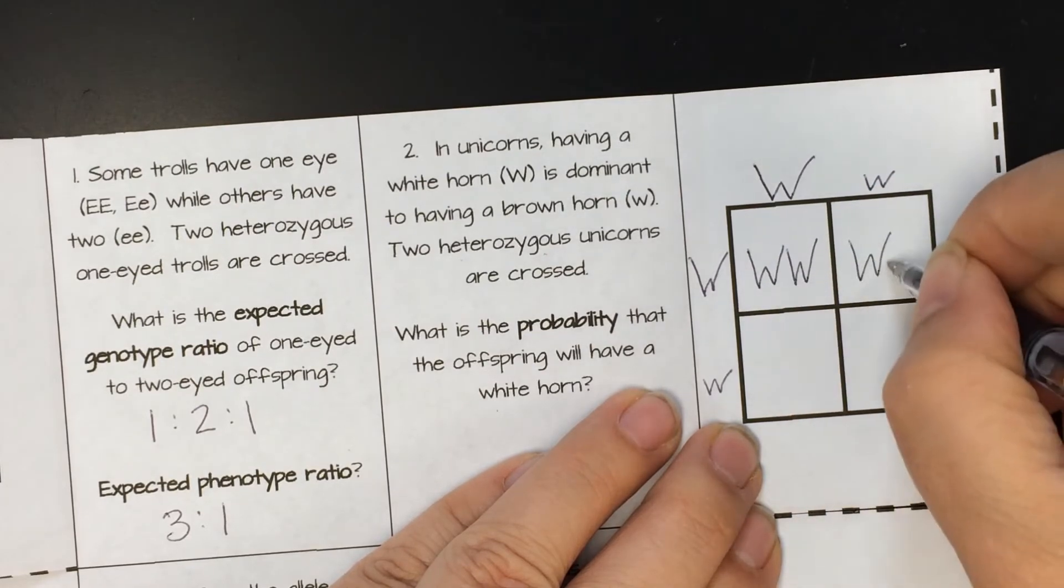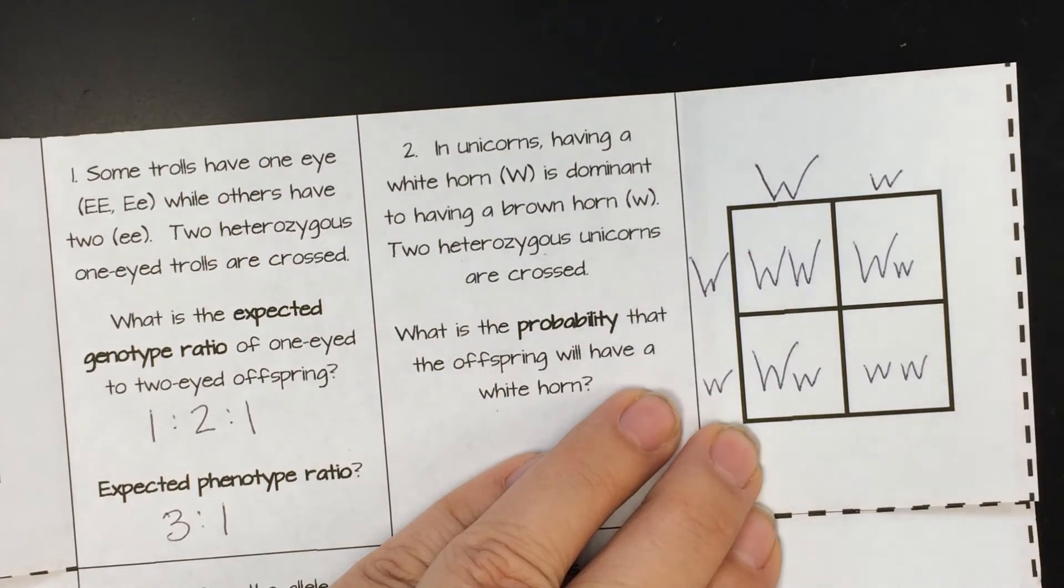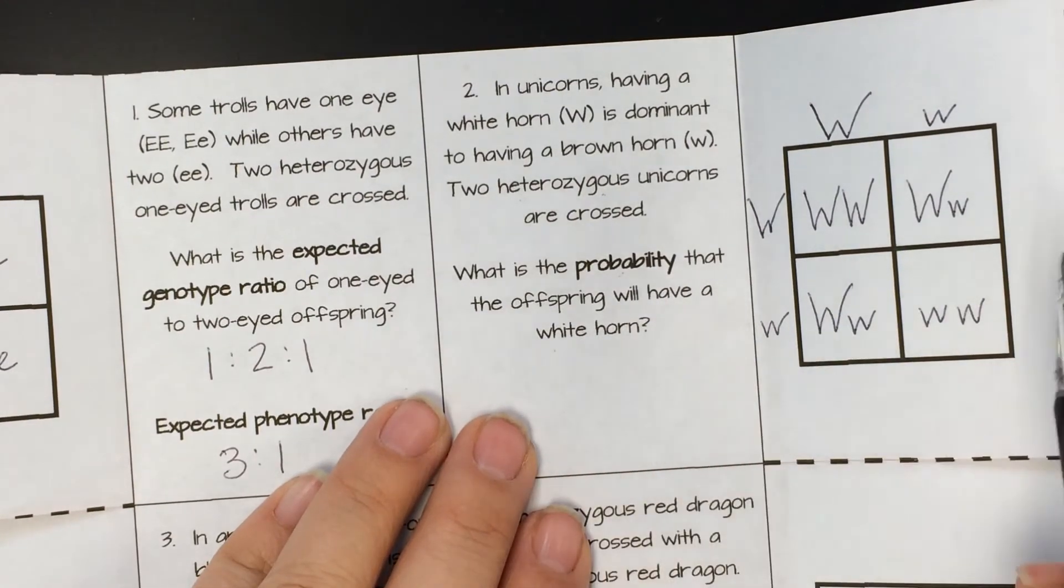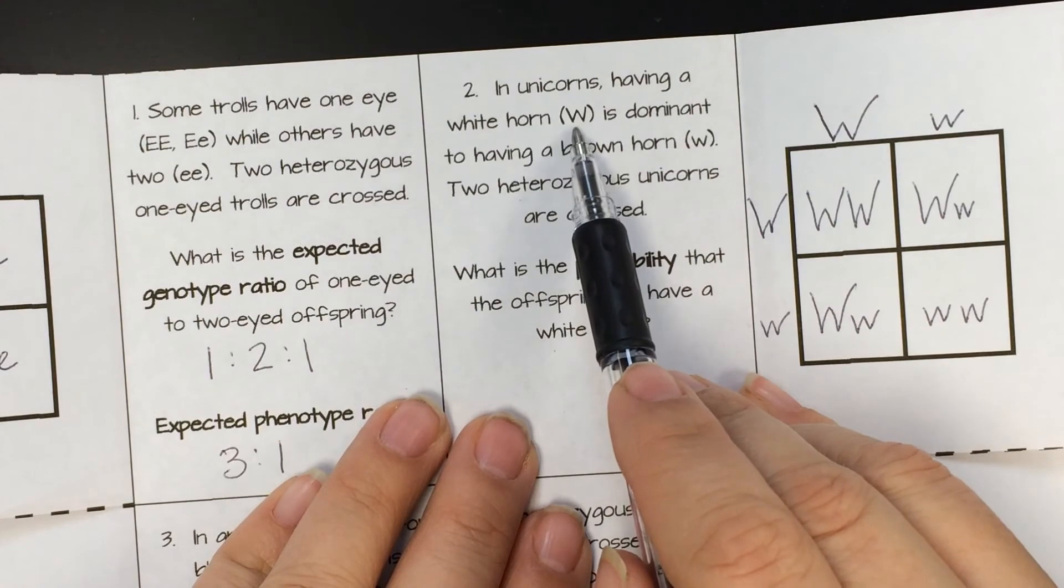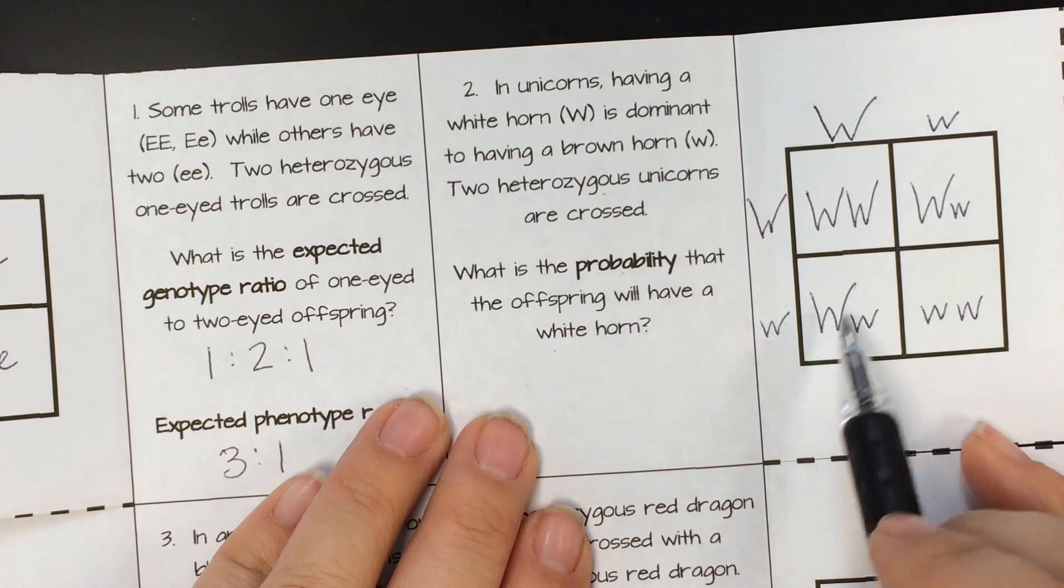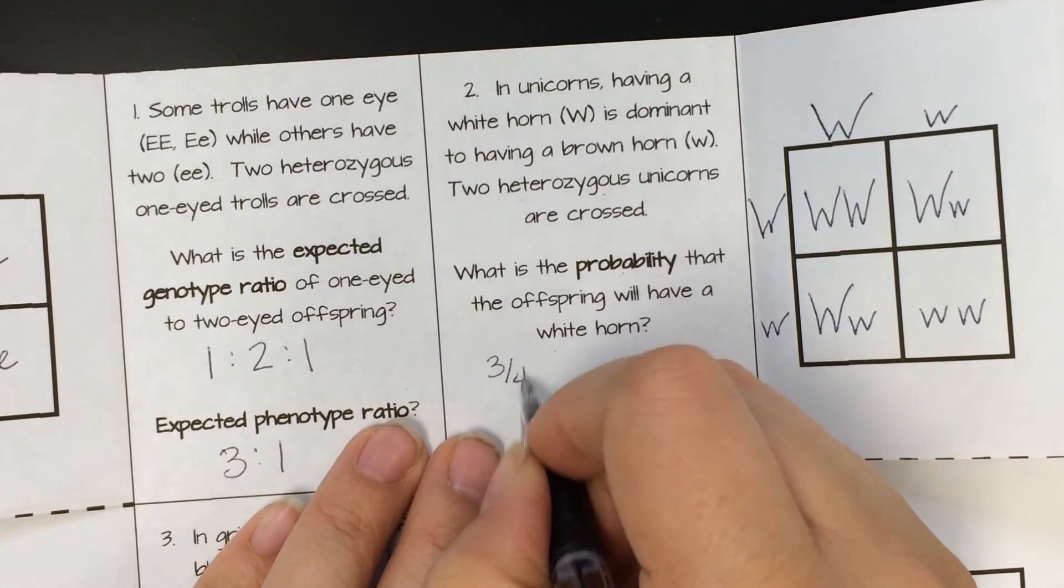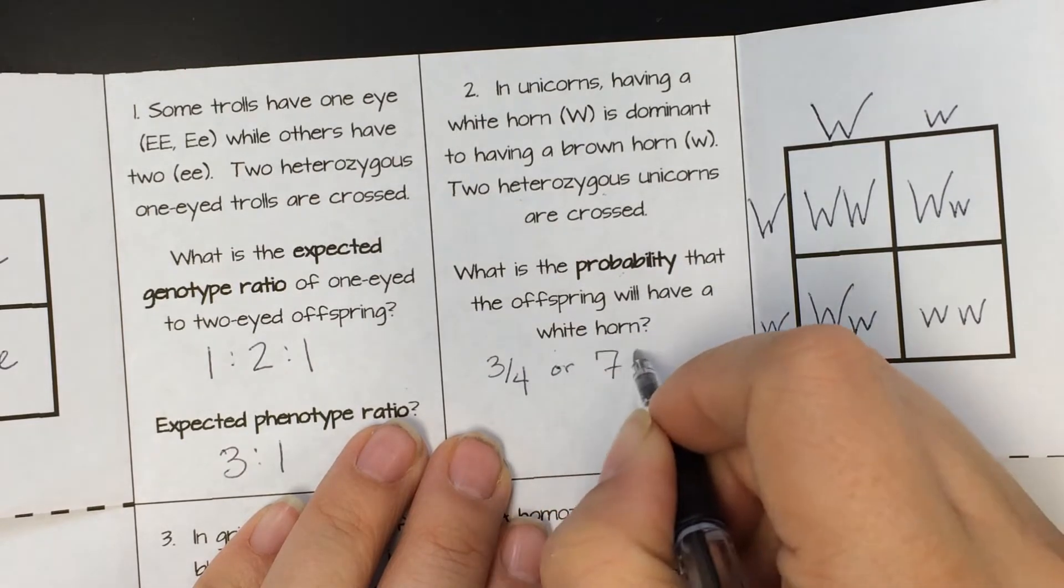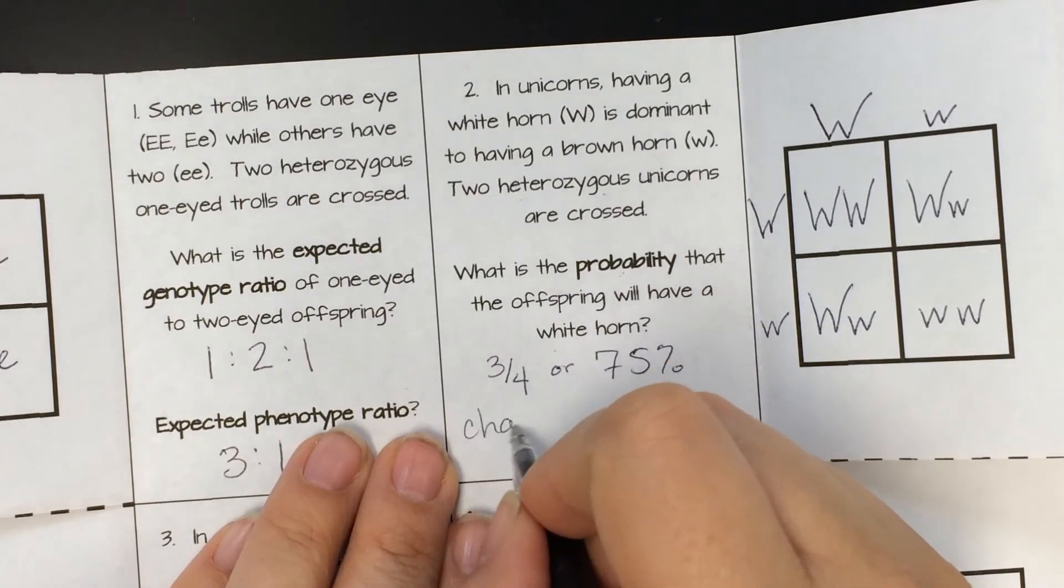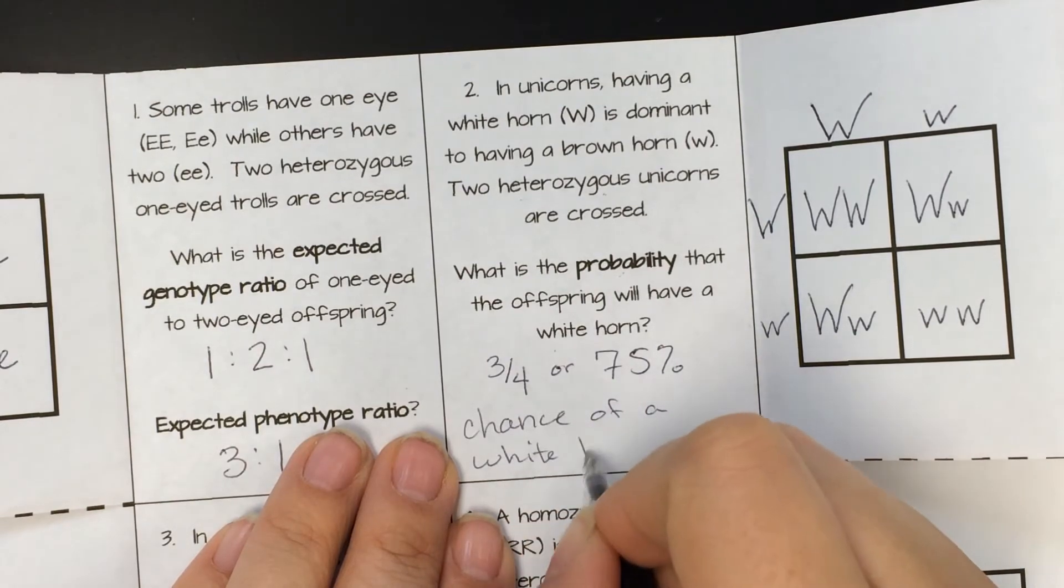Big big, big little, big little, little little. Now, what is the probability that the offspring will have a white horn? So if we look here, the white horn again was the dominant trait. So if it has a big W, it's going to be a white horn. So one, two, three out of four boxes have the white horn. So three-fourths, or if we wanted to do that percentage, it would be 75% chance of a white horn.